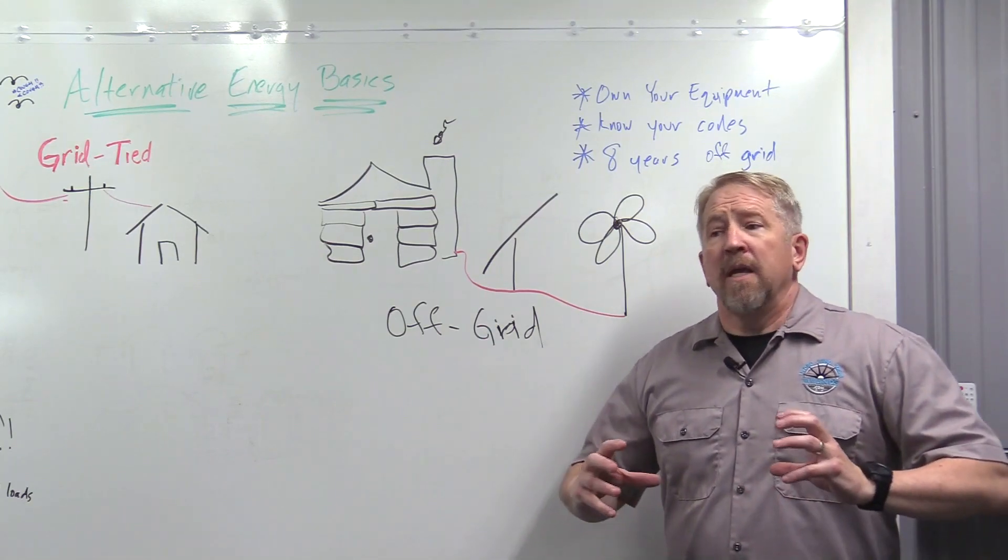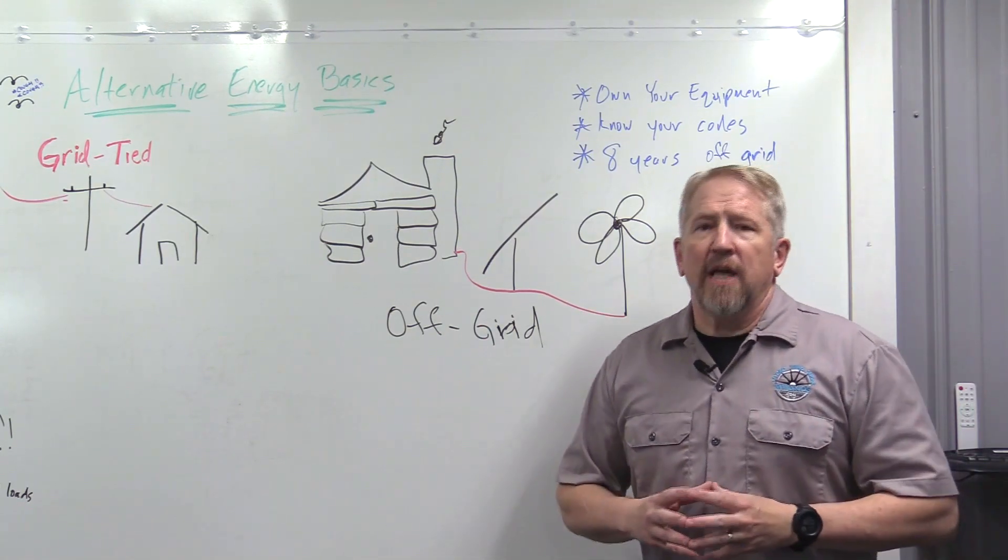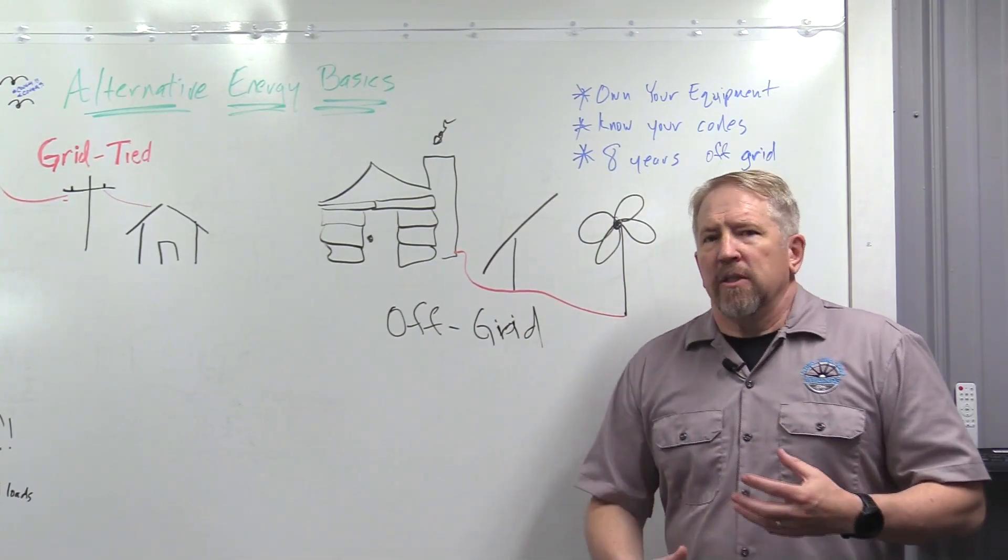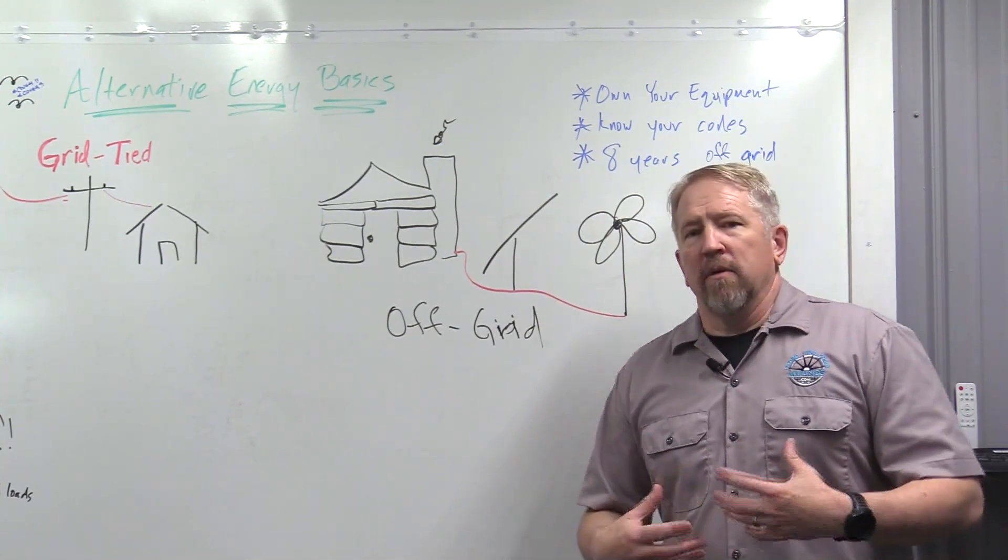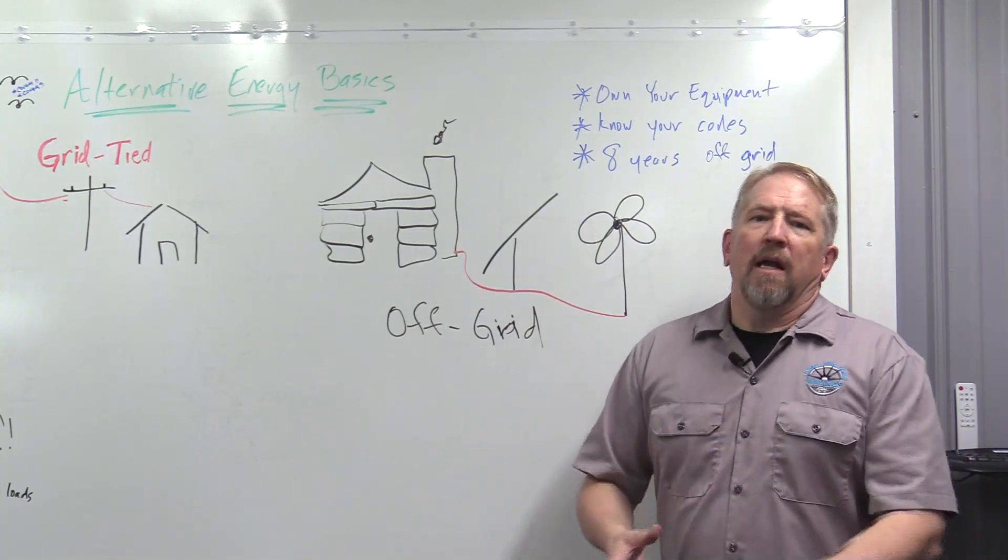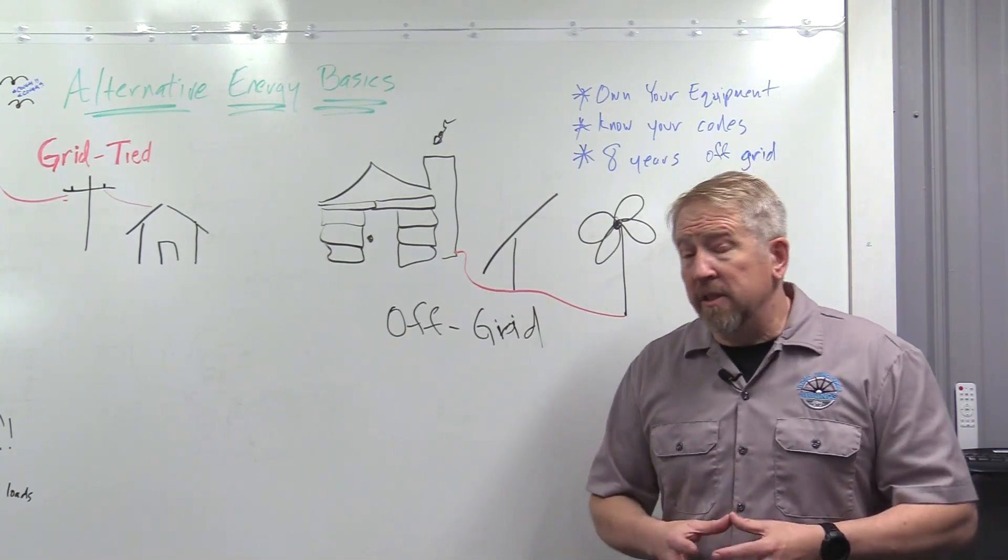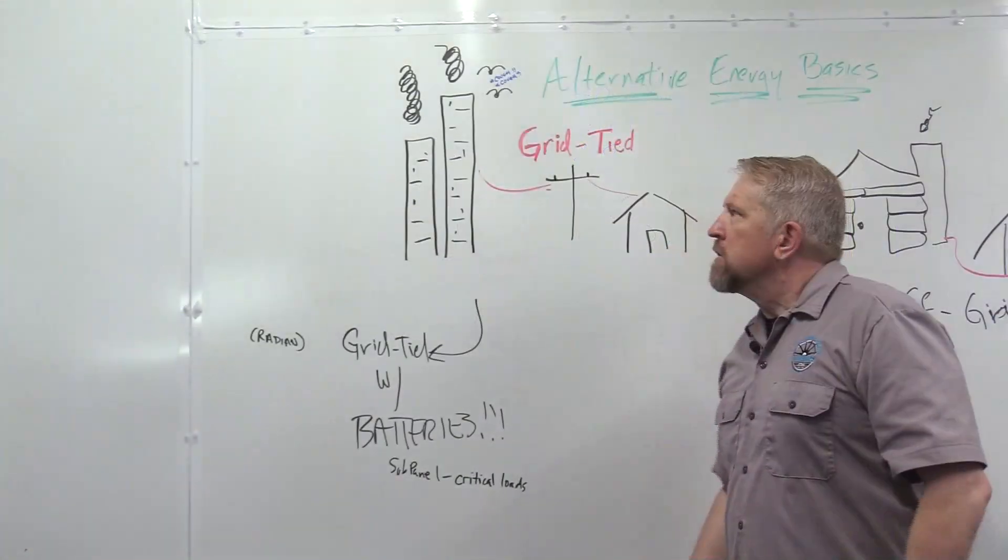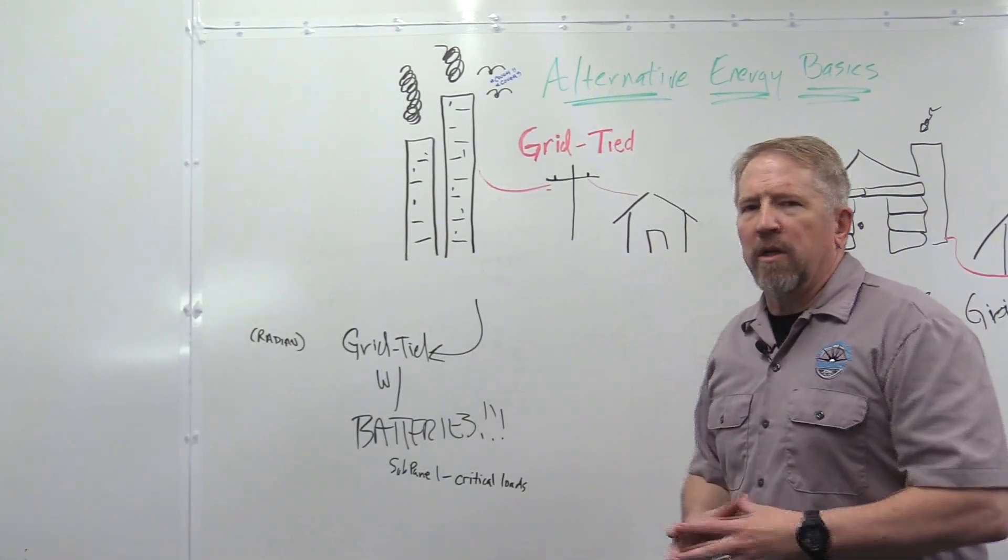And again, you still need to check your local codes. Some situations will not allow you to have an occupancy permit. Some will not allow you to have a homeowner's insurance. You need to check that. But off-grid is very simple to take a look at.